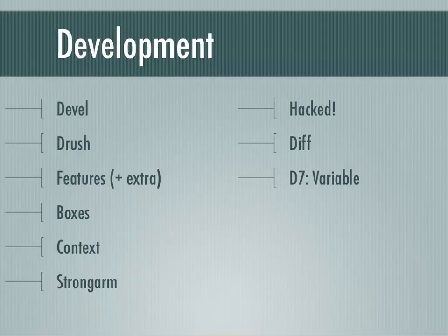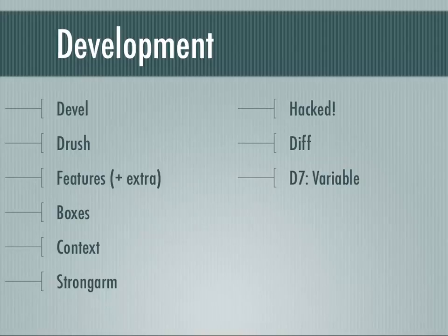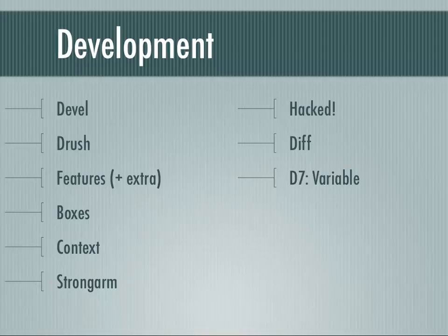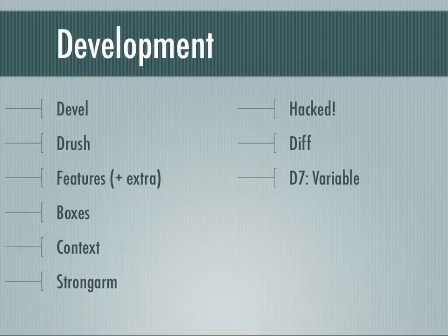Boxes Module, Context, and Strong Arm are all sort of members of a suite of modules now maintained by a company called Phase 2, originally built by another huge Drupal shop called Development Seed — they're all about making deployment of stuff easier. Boxes Module is basically the same as the built-in custom block creation, except it includes the ability to dump your blocks into a Feature. If you're allowing the creation of custom blocks on any site, you might consider installing Boxes Module and using it instead of the one that's built in.